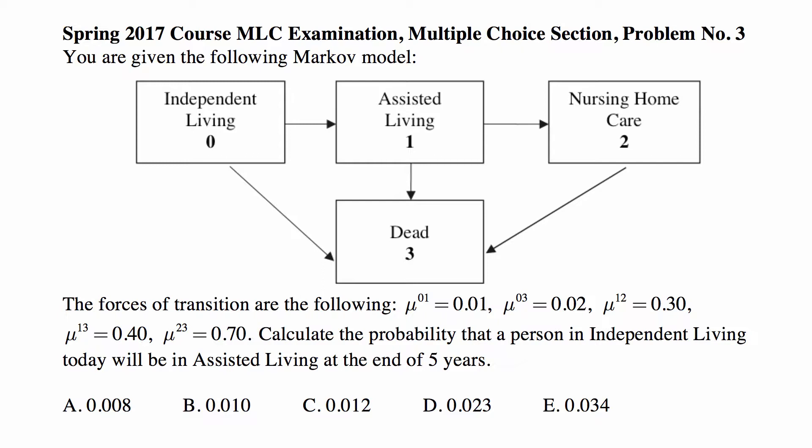The states are called 0, 1, 2, and 3. So 0 is independent living, 1 is assisted living, nursing home care is 2, and dead is 3.